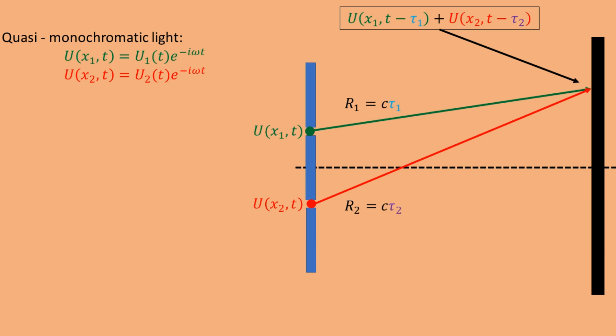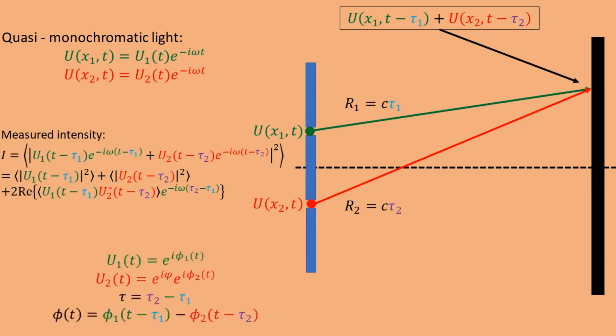Now let's see what happens if we have quasi-monochromatic light, which means that the fields predominantly oscillate with an angular frequency omega, but there will be some temporal fluctuations described by u1(t) and u2(t). We can again write the measured intensity as the time-average of the squared modulus of the total complex-valued field. Now assuming u1 and u2 have equal amplitudes and a phase difference phi, but additionally u1 has phase fluctuations phi1(t) and u2 has phase fluctuations phi2(t), and defining tau = tau2 - tau1 and phi(t) = phi1(t - tau1) - phi2(t - tau2), we can write the observed intensity as 2 times 1 plus an interference term. The interference term includes the time-average over the difference between the phase fluctuations phi(t). If this time average equals 1, we obtain the same expression as for monochromatic light — but when is it 1, and what happens if it's not?